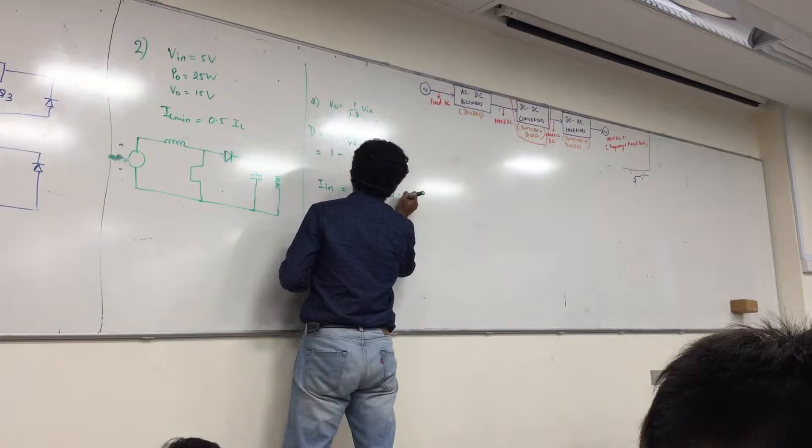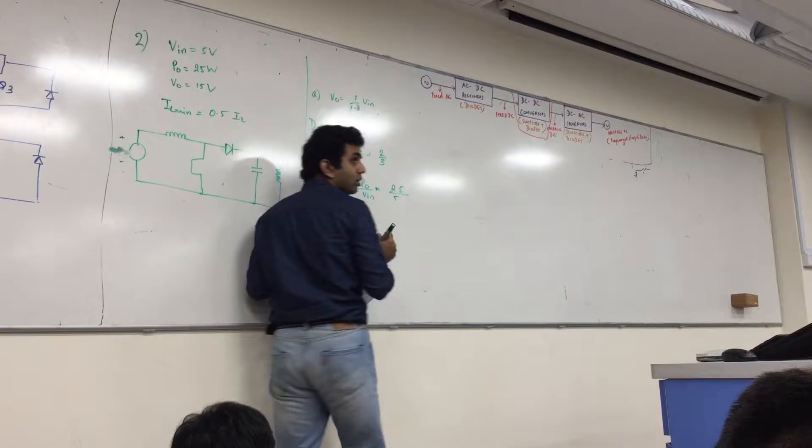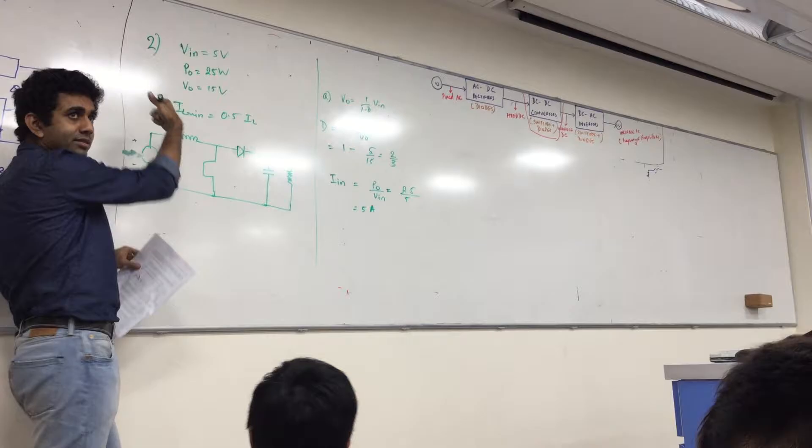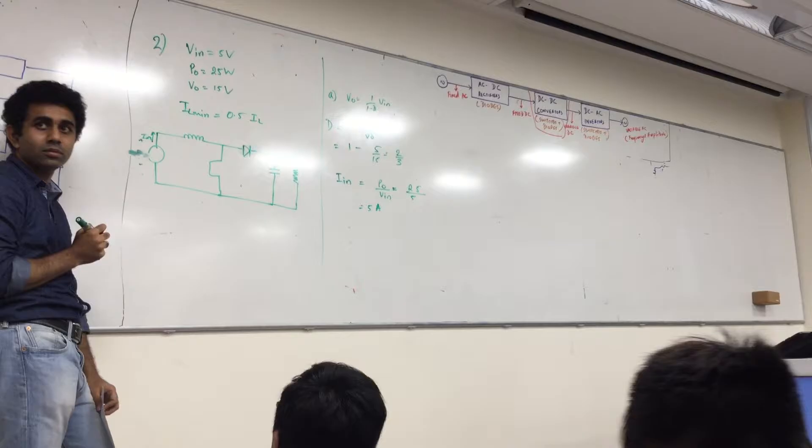It's just PO by Vin. Vin is V output I output, right, which is the power output. So I can say this is corresponding to 25 by 5 which is 5 amperes. Ok, what's next? Look at your-